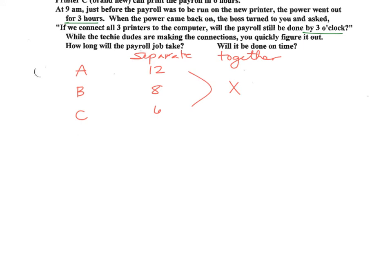What would it look like? X over 12. Plus X over 8. Plus X over 6 equals what? 1. Right? One full job. Get the job done.